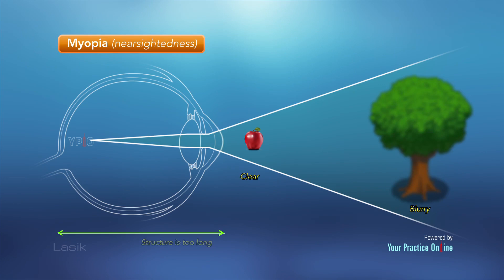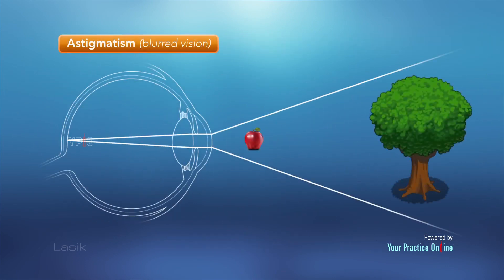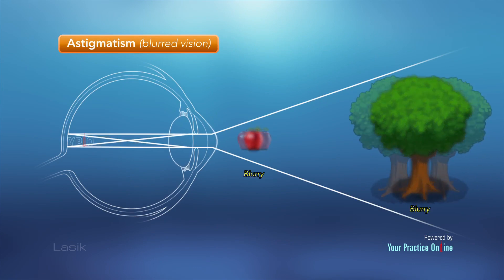Myopia is caused when the structure of the eyeball is too long or when the cornea is too curved. Astigmatism is an eye condition in which the vision is blurred due to an irregular shape of the cornea or curvature of the lens.